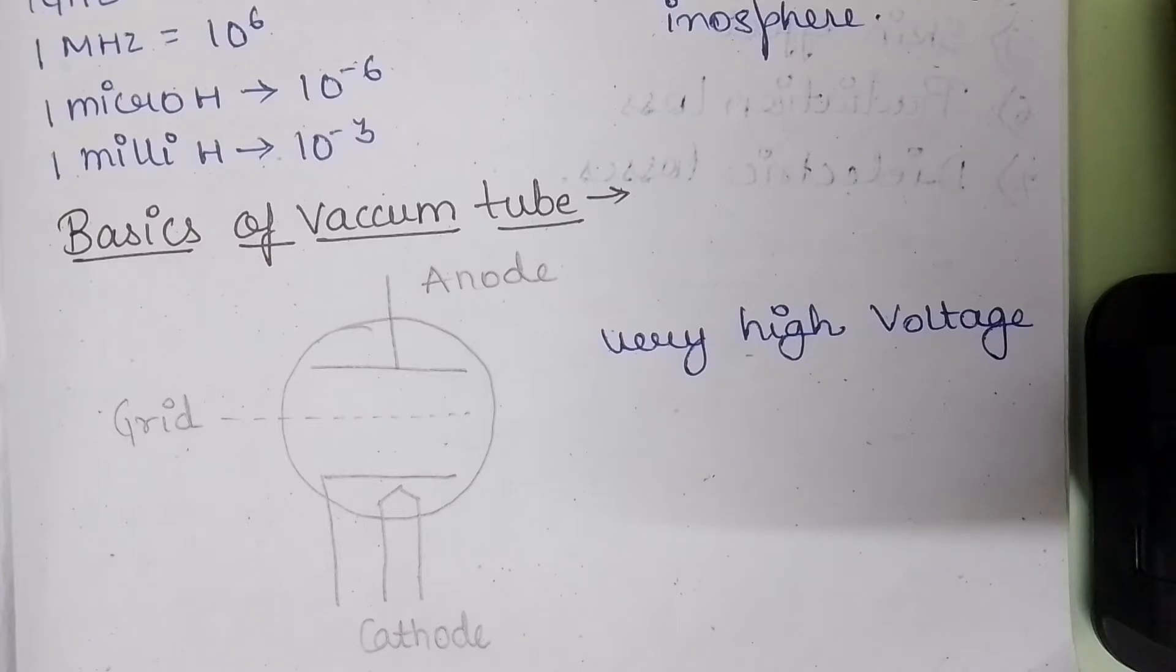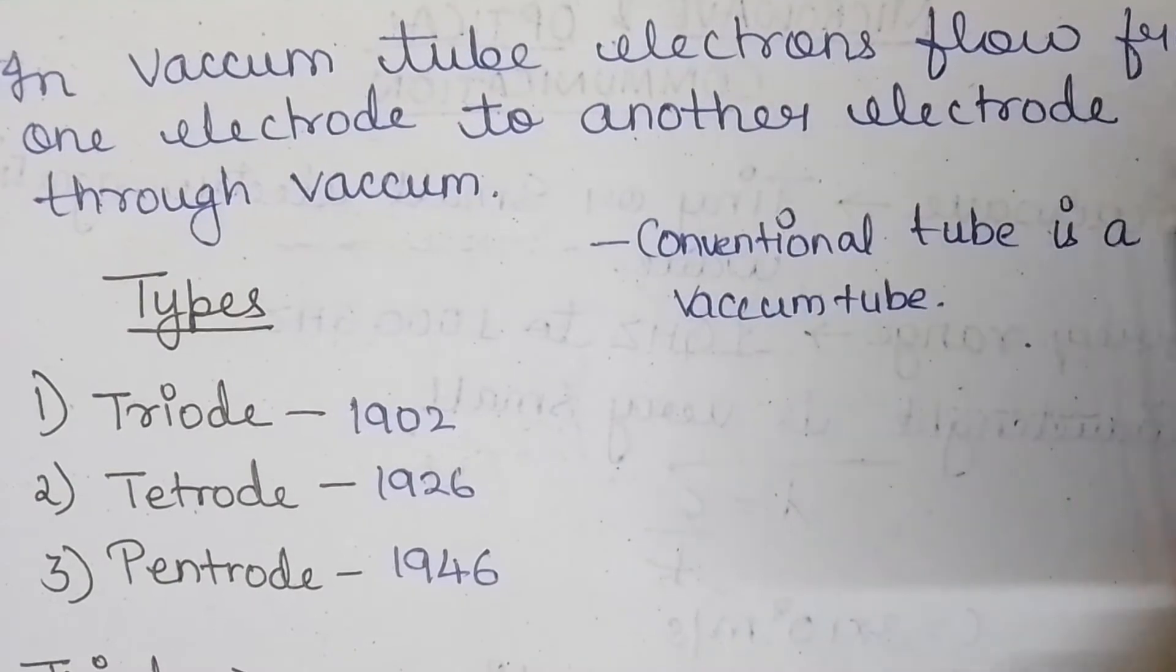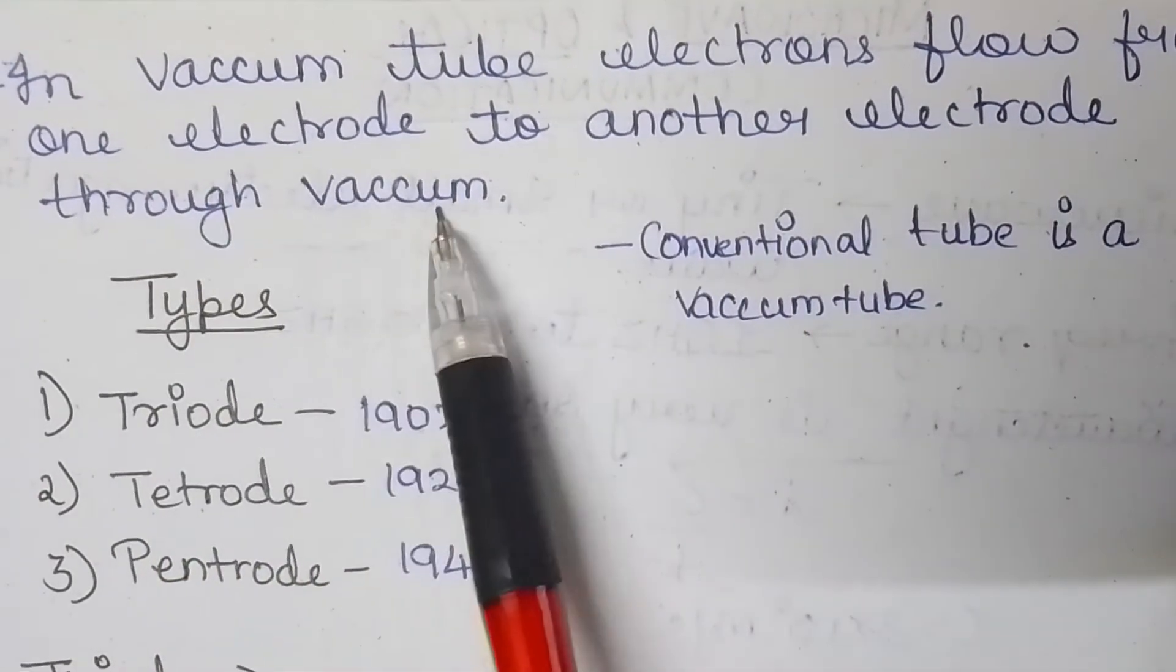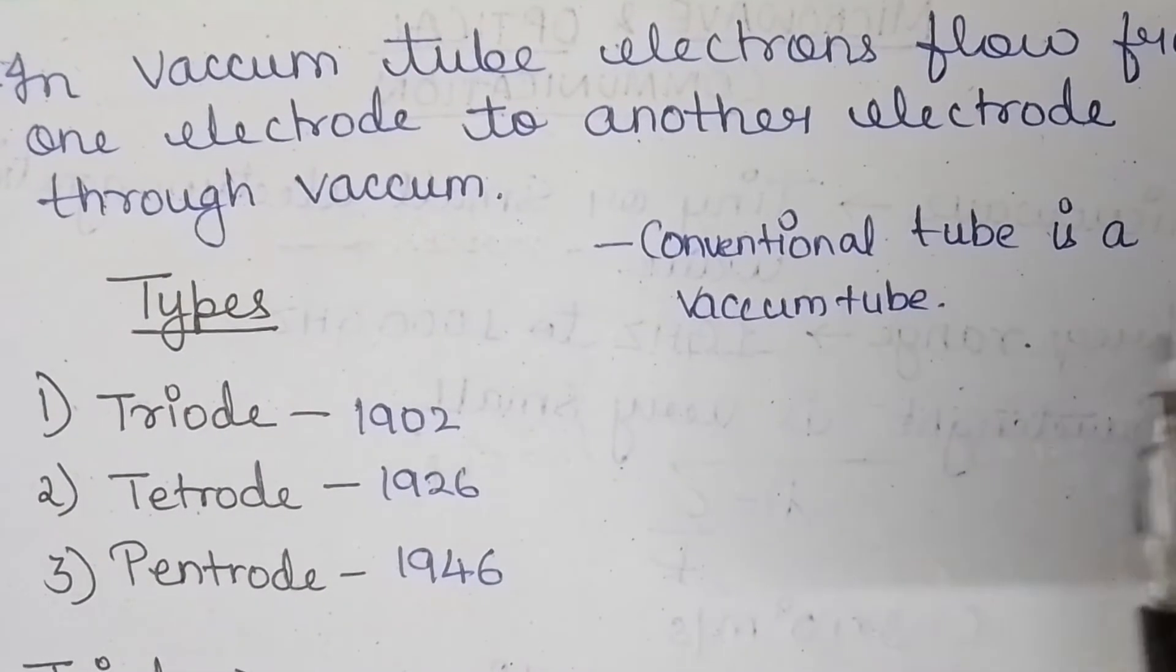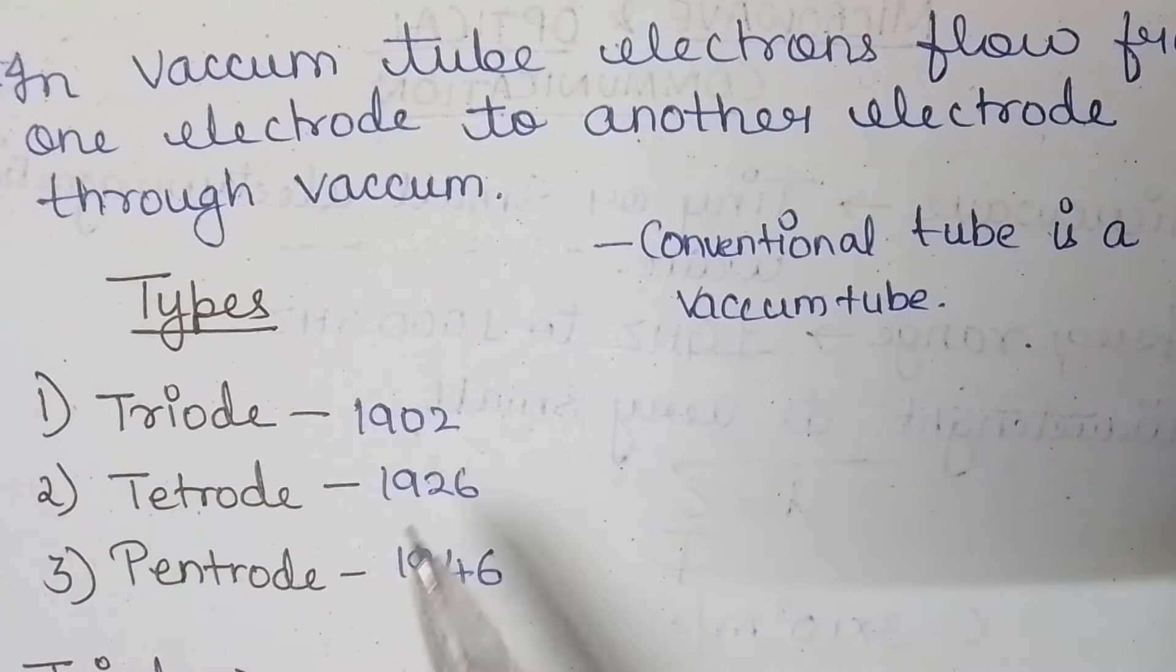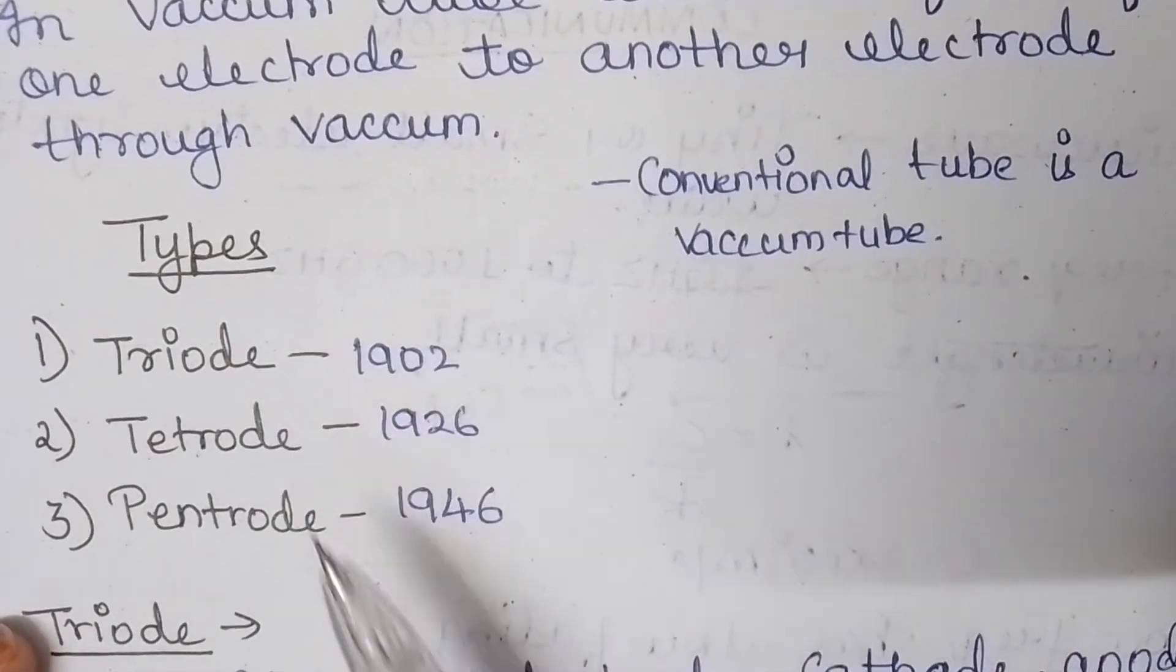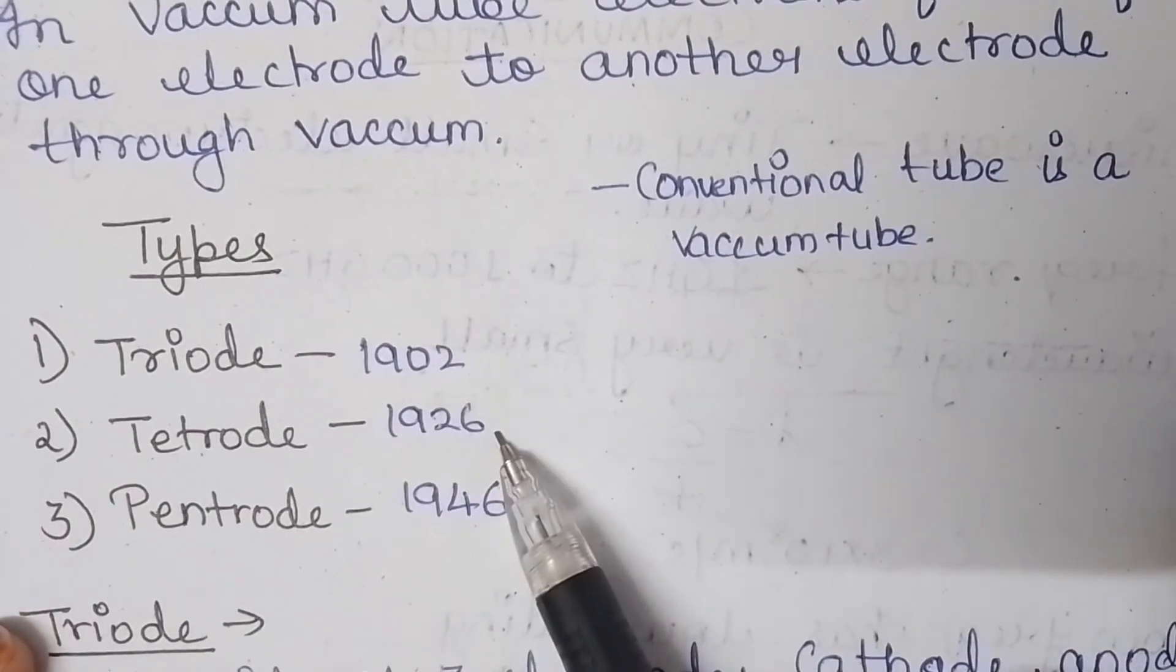Now let's learn about the vacuum tube. In the vacuum tube, the electrons flow from one electrode to another electrode through the vacuum. A vacuum tube is a conventional tube. There are three types of vacuum tubes: triode, tetrod and pentrod, which were invented in 1902, 1926 and 1946 respectively.